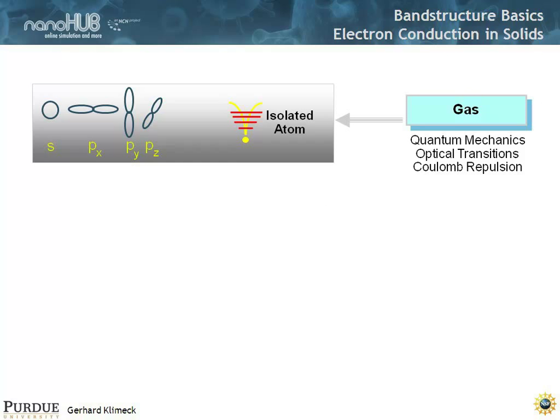Going back to some fundamentals on quantum states, we know about isolated atoms that they have discrete states that we describe by orbitals. This is where really quantum mechanics lives and has been invented in. You have optical transitions, Coulomb repulsion - we understand all of these things quite well in isolated atoms.